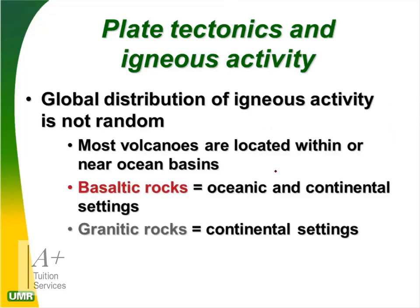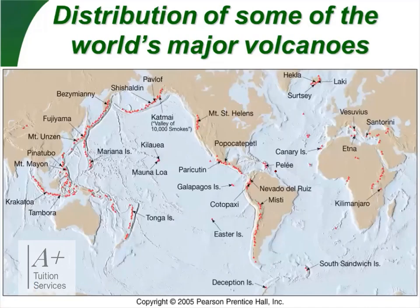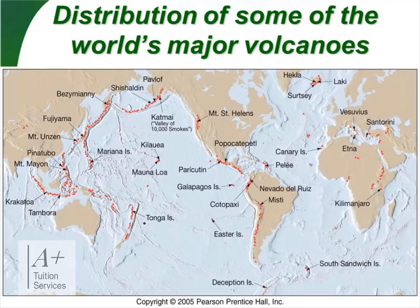Plate tectonics and igneous activity: the global distribution of igneous activity is not random. Most volcanoes are located within or near ocean basins. Basaltic rock occurs in both oceanic and continental settings — basaltic lava is runny and low in silica. Granite rocks are associated with continental (land) settings. Here is a world map of the distribution of the world's major volcanoes.